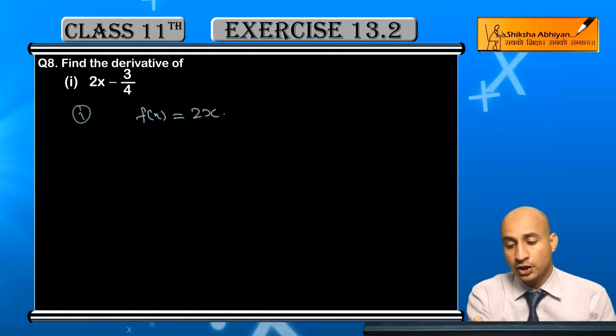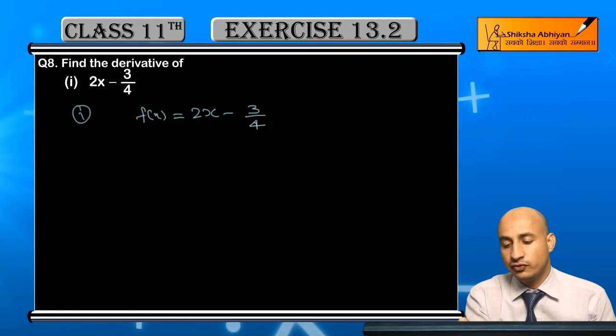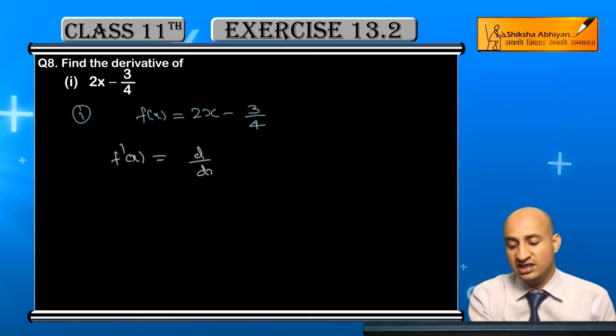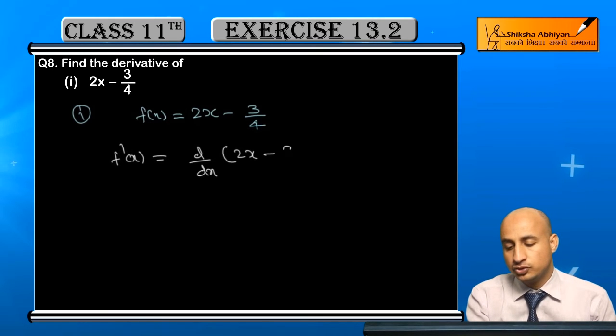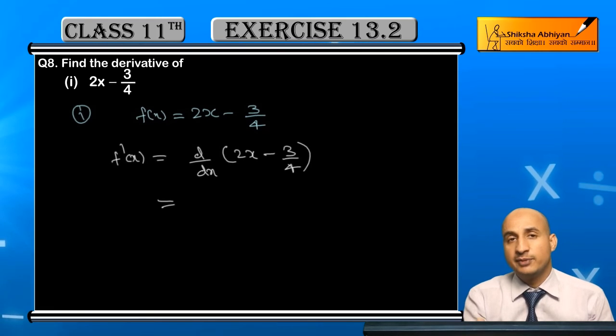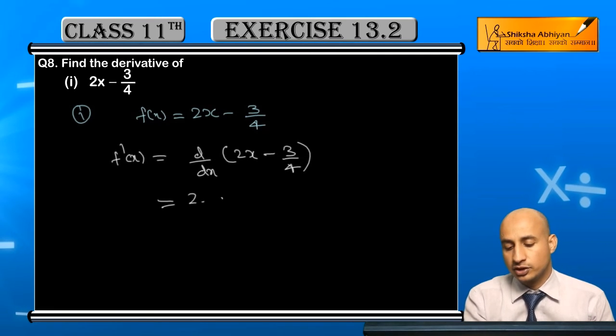equal to 2x minus 3 by 4. Now this function is nothing but d/dx of 2x minus 3 by 4. Since we're taking the derivative, first we'll do 2x, then 3 by 4, so 2 will come.